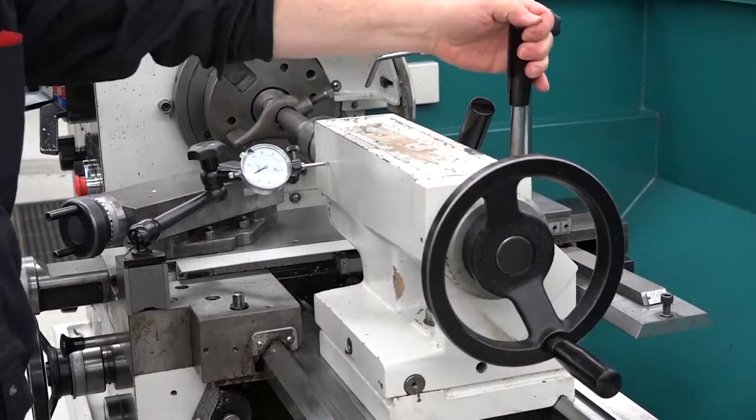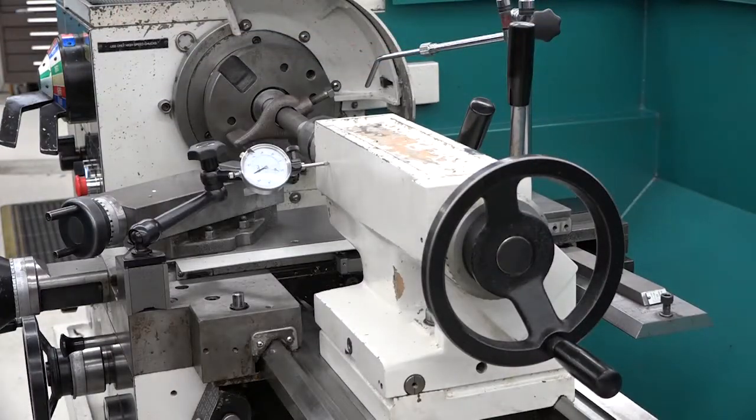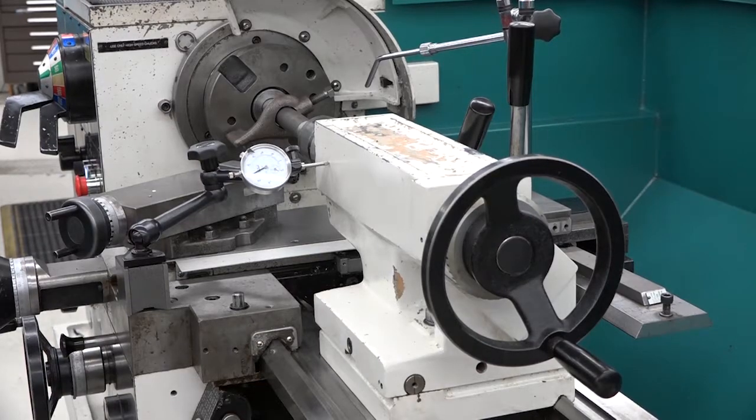Lock the tailstock. Watch for any movement on the indicator. If it moves, unclamp and readjust the tailstock.